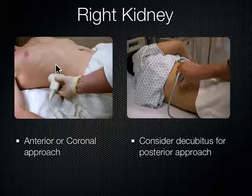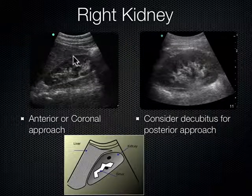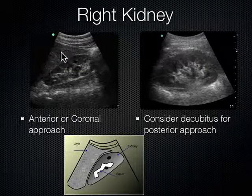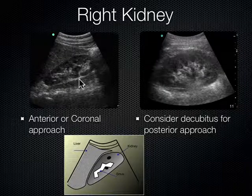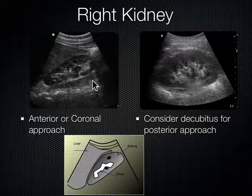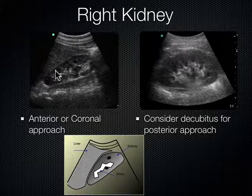If you can't get a good view that way, you can roll the patient into left lateral decubitus — decubitus means on their side — and look between the ribs from a posterior approach. You can see the kidney along the liver as your window, and as we go more posterior, there's another structure behind the kidney called the psoas muscle, which lies right on top of the spine. So the layers are: spine, psoas, kidney, liver. This shows the upper, mid, and lower poles of the kidney.